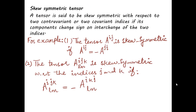The next definition is skew-symmetric tensor, also called anti-symmetric tensor. A tensor is said to be skew-symmetric with respect to two contravariant or two covariant indices if its components change sign on interchange of the two indices. For example, a12 equals minus a21. If aij is a skew-symmetric tensor, then aij equals minus aji. Similarly, for a higher-ranked tensor, the same sign-change property applies on index interchange.